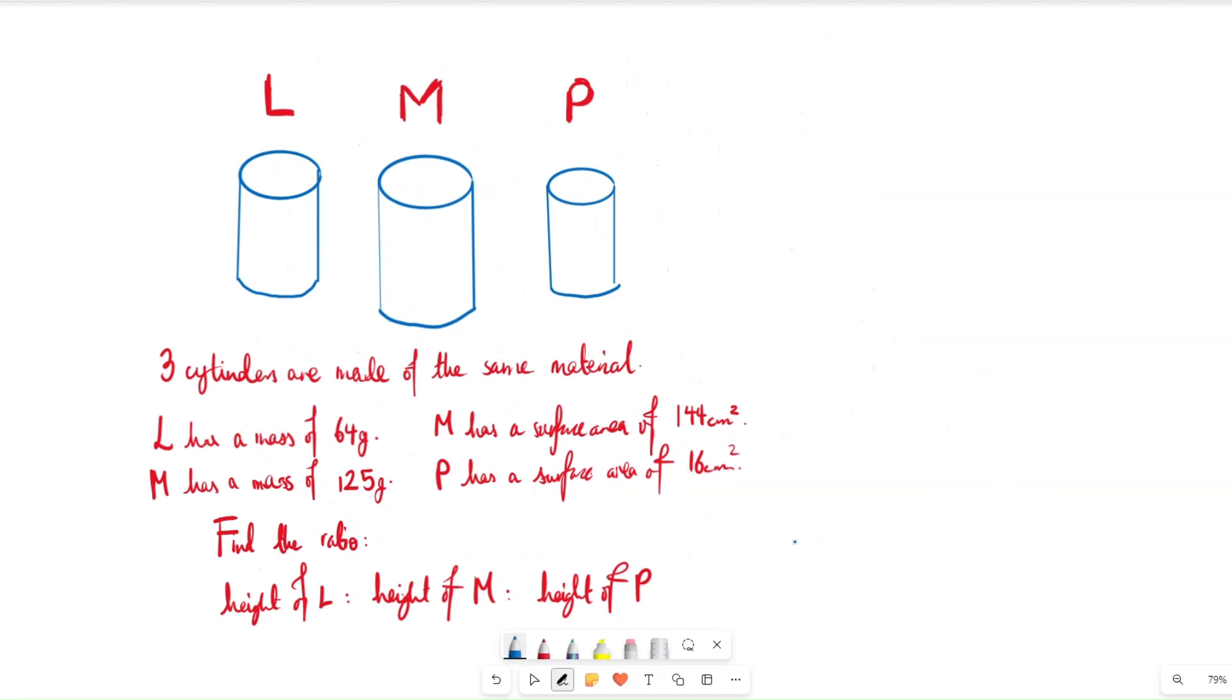Let's look at making a ratio first. We know that the ratio of L to M to P is going to be something, we don't know what yet. But we can look at the mass. The mass is 64 to 125. But let me bring your attention to what actually is mass. You should learn in maths and physics that density equals mass over volume. If we rearrange for mass, we get mass equals density times volume.